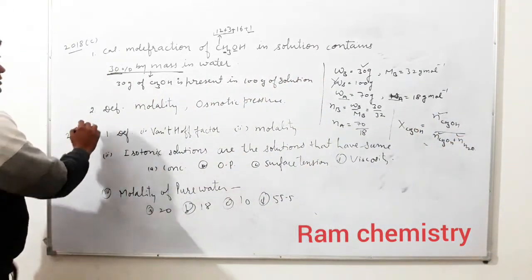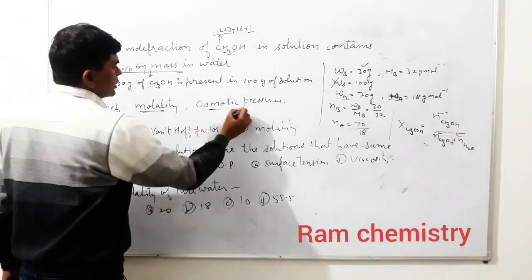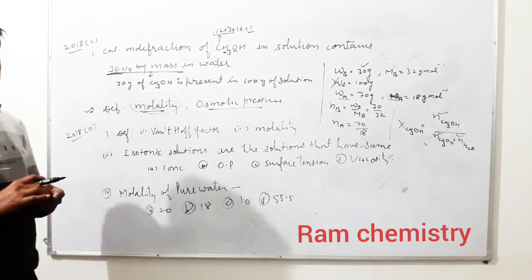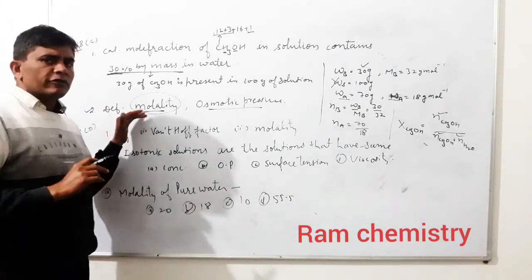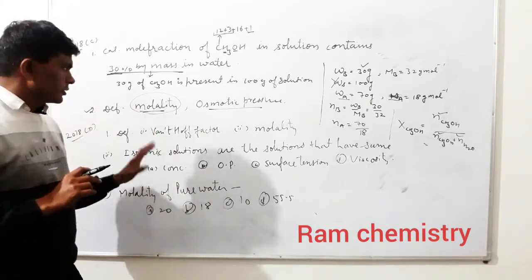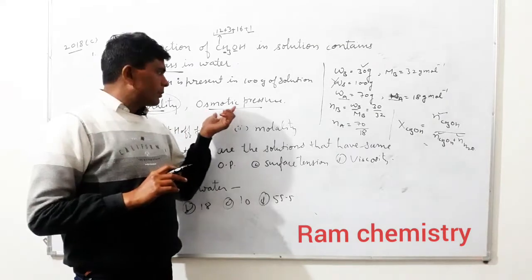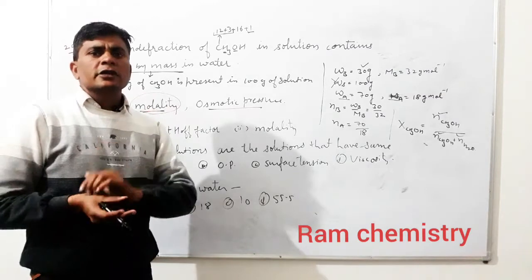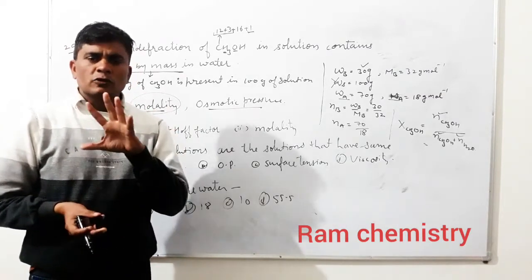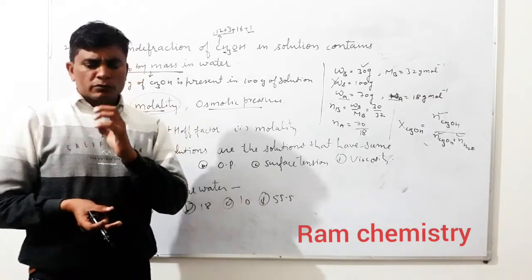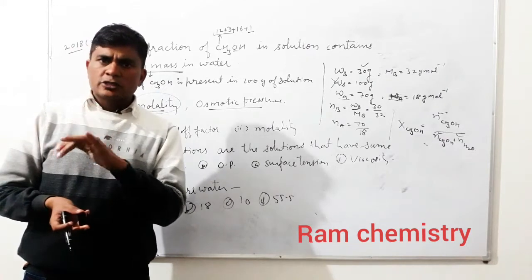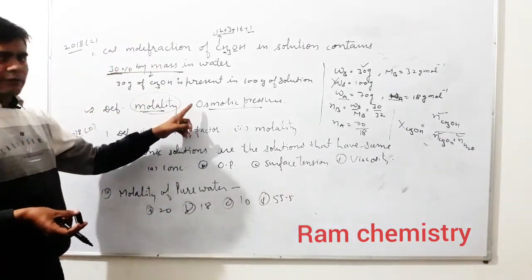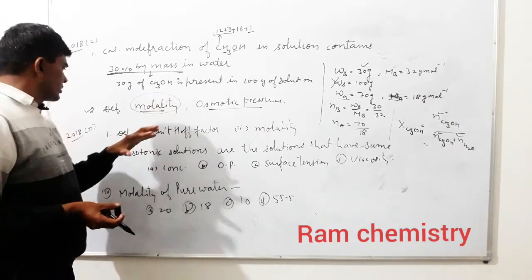The second question in Set C: define molality and osmotic pressure. Molality ki definition: number of moles of solute present in 1 kg of solvent. Osmotic pressure: the minimum pressure that must be exerted on the solution side in order to prevent the passage of solvent molecules from the solvent side to the solution side. This has been discussed in detail in previous videos.